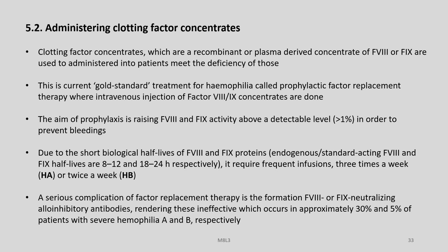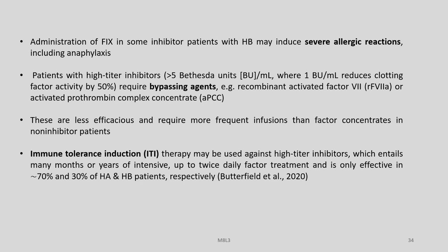It requires frequent infusions — three times a week for Haemophilia A or twice a week for Haemophilia B. A serious complication of factor replacement therapy is the formation of factor 8 or factor 9 neutralizing allo-inhibitory antibodies, rendering these factors ineffective, which occurs in approximately 30% and 5% of patients with severe haemophilia A and B respectively. Administration of factor 9 in some inhibitor patients with Haemophilia B may induce severe allergic reactions including anaphylaxis. Patients with high-titer inhibitors require bypassing agents such as recombinant activated factor 7 or activated prothrombin complex concentrate.